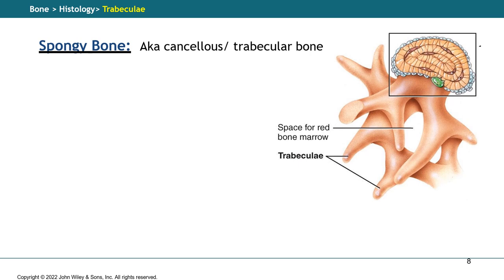We've finished with the compact bone and talked about the cellular components of osteons. Now we're going to do something similar with the spongy bone, also known as cancellous bone or trabecular bone. Here you see the trabeculae, which look like spicules, and in between those you find irregular cavities where you will find red bone marrow — that is where blood cells are going to originate.